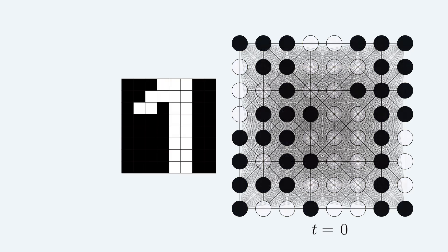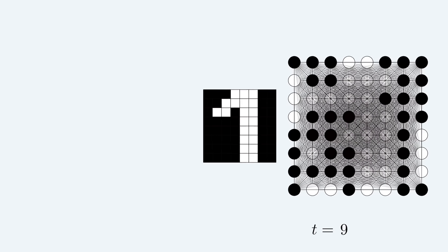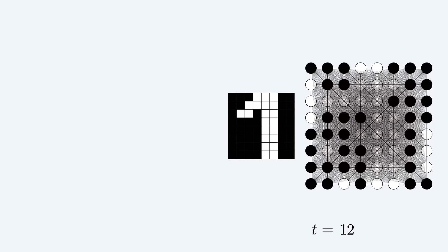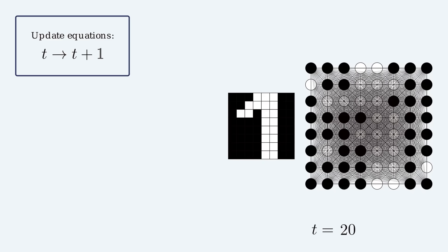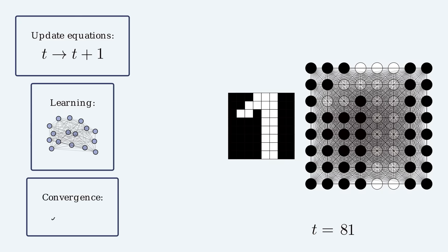This is a network of 64 neurons that I cleverly constructed such that it memorized a pattern of 8x8 binary pixels. To describe what this model is actually doing, we need to take the following steps: describe how the activity of the network changes over time, address the question of learning — how we actually imprint memories into the network — and understand if and when the network converges to its memory states.